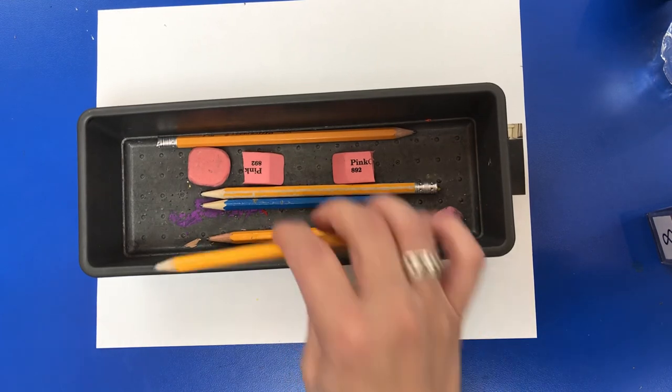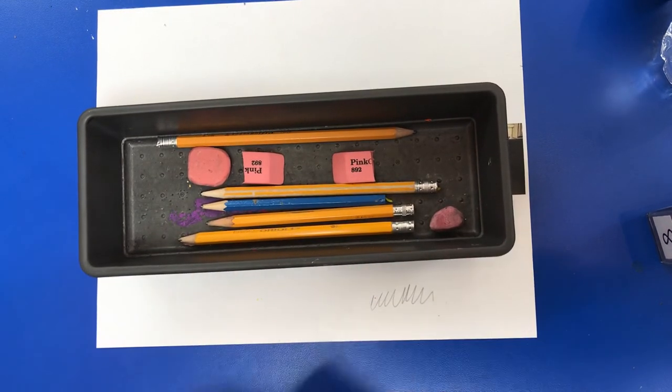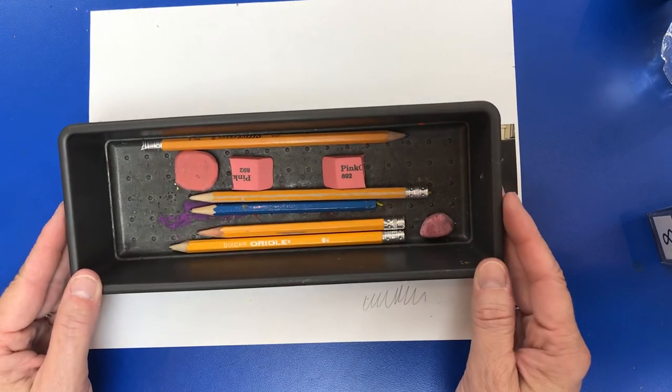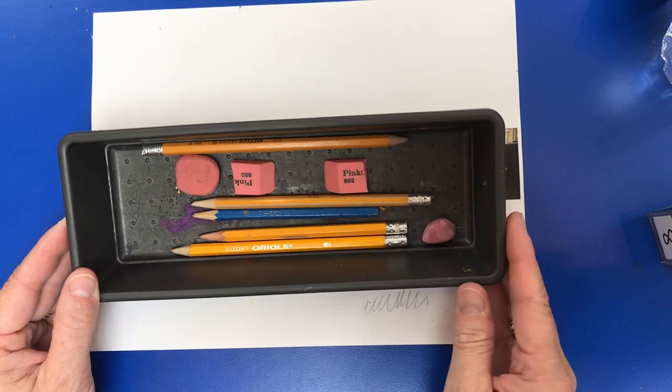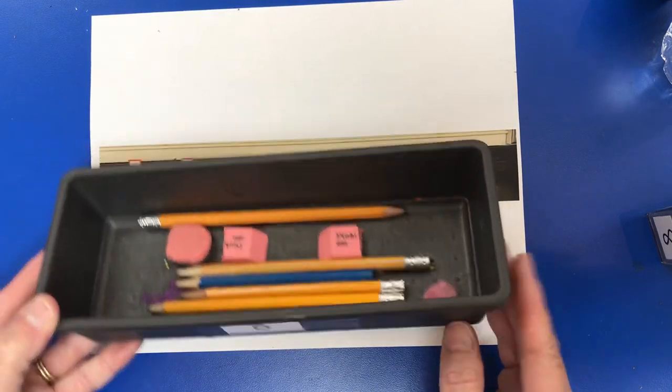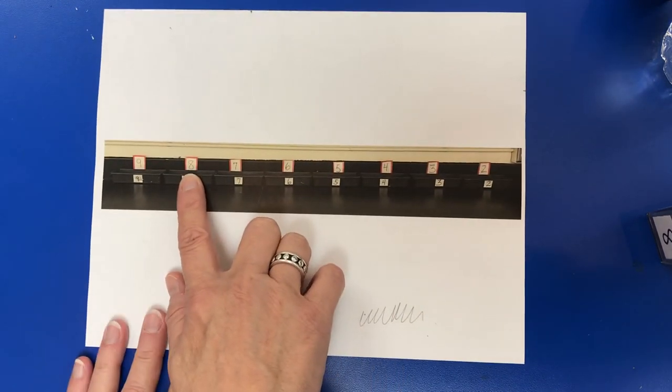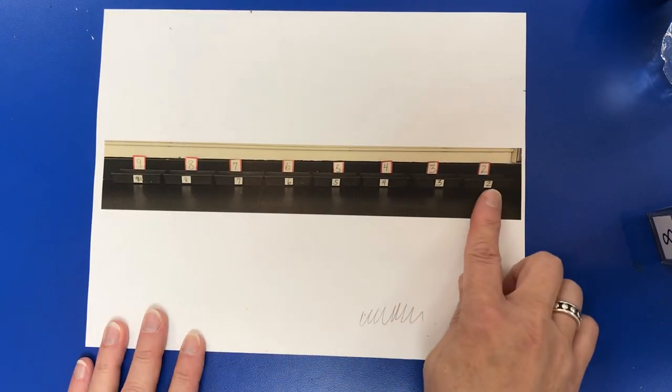So when you're done using your pencil bin at your station, make sure you have at least four pencils inside and four erasers. This will then get put back up where it belongs underneath your table number and lined up.